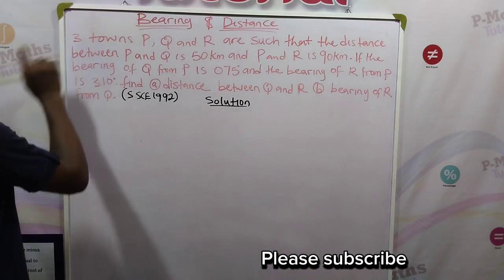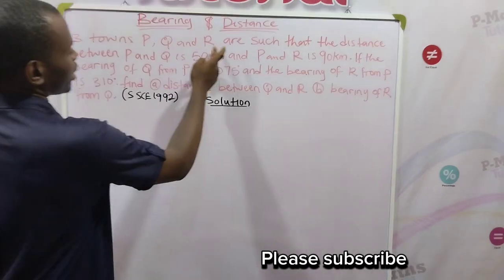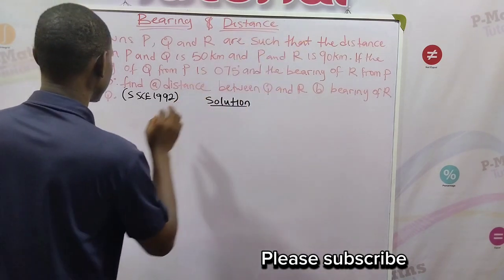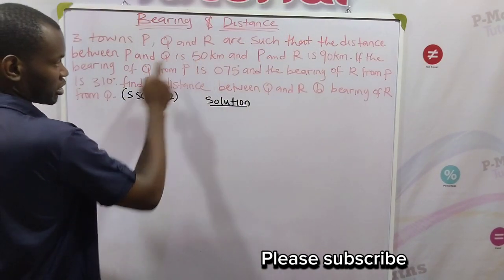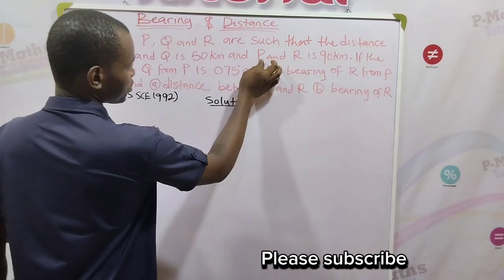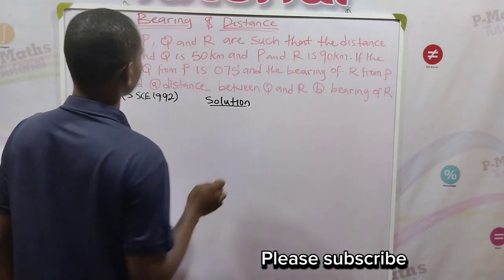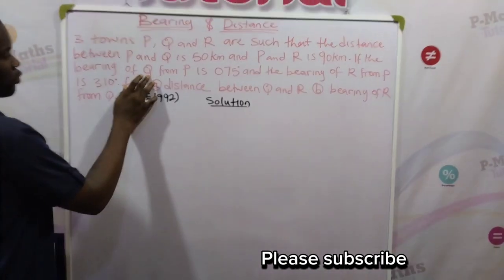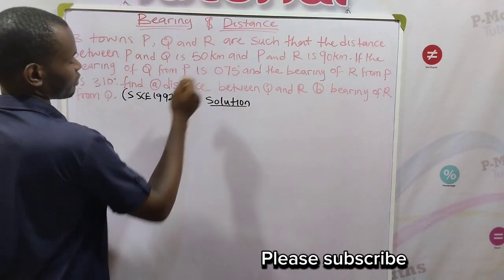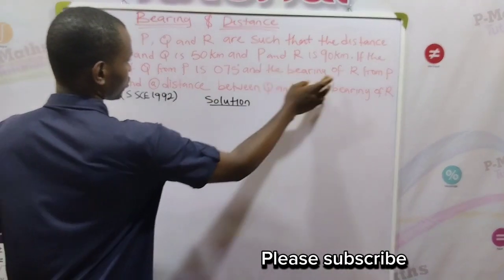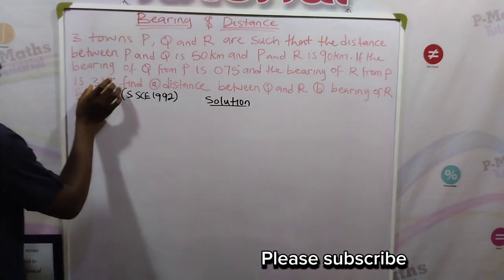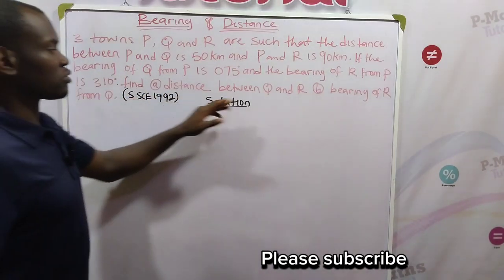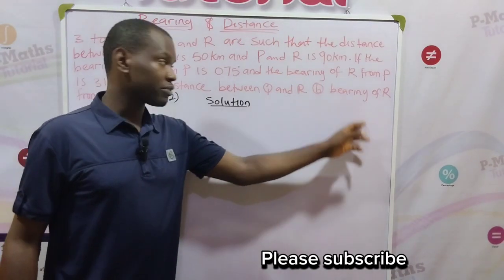So we have three terms P, Q and R such that the distance between P and Q is 50 kilometers and P and R is 90 kilometers. If the bearing of Q from P is 075 degrees and the bearing of R from P is 310, then find the distance between Q and R and the bearing of R from Q.